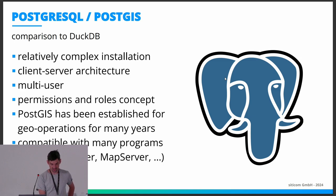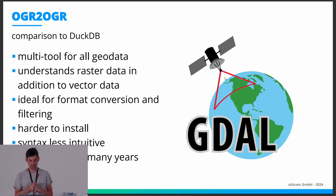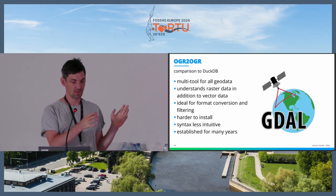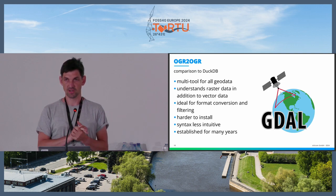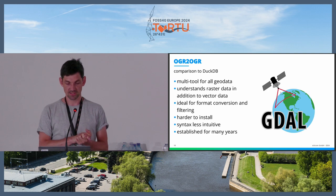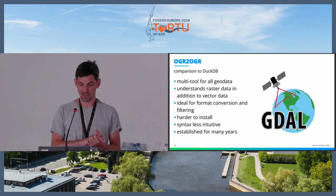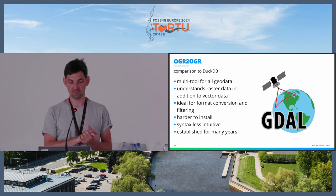Another interesting tool to compare is OGR2OGR — a multi-tool for all types of geodata. It can read and write vector data, and with raster data you can also read and write with GDAL commands. You can do some processing, but in contrast to DuckDB the syntax is a bit less intuitive, at least in my opinion. It's still very powerful and probably more stable because it's been battle-tested for many years. OGR2OGR might also be a bit more difficult to install, especially if you want the very latest version.